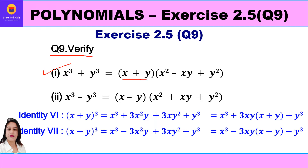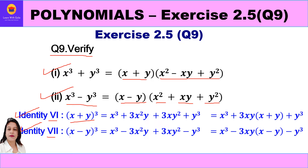In question 9, we have to verify: x cube plus y cube is equal to (x plus y)(x square minus xy plus y square), and also prove x cube minus y cube is equal to (x minus y)(x square plus xy plus y square). For proving these, we will use identities 6 and 7, which are cubic identities.